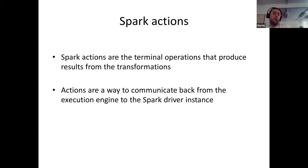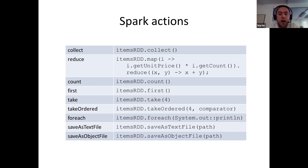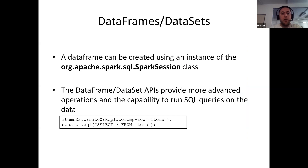When dealing with transformations, you also need terminal operations that take data from various nodes in the Spark cluster and return it back to the Spark driver. Spark actions are the terminal operations that produce results from transformations and are a way to communicate back from the Spark cluster to the Spark driver. Actions provided by Apache Spark include collect, reduce, count, first, and take. There are also special actions such as forEach, which iterates over each item in the returned dataset, and saveAsTextFile or saveAsObjectFile to save a dataset to a file.